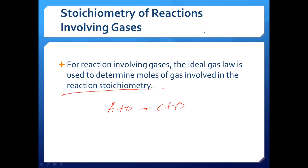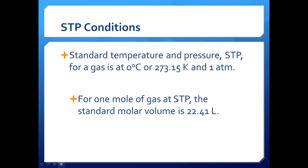Also remember that at standard temperature and pressure (STP), the conditions are 0°C (273.15 K) and 1 atm. One mole of an ideal gas at STP occupies 22.4 liters. These are the values you will use when working at standard temperature and pressure conditions for one mole of ideal gas.